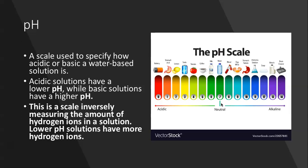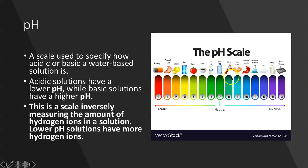The pH scale inversely measures the amount of hydrogen ions — an ion is a charged particle of hydrogen. A low rating on the pH scale means there are more hydrogen ions, so there are more hydrogen ions in an acidic solution than in a basic solution. Organisms that live in a specific environment, like gut biota in stomach acid, really only do well in acidic conditions — put them in a basic solution and they would die. The reverse is true as well.